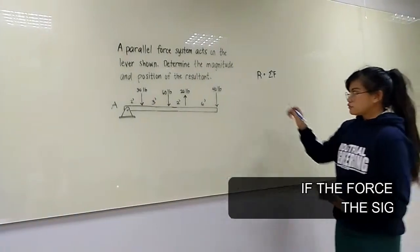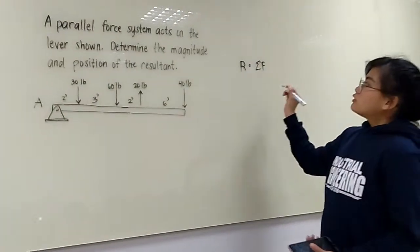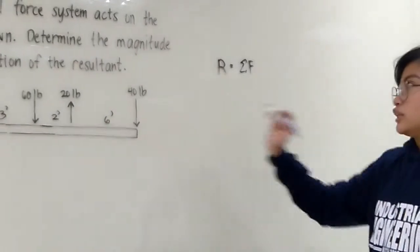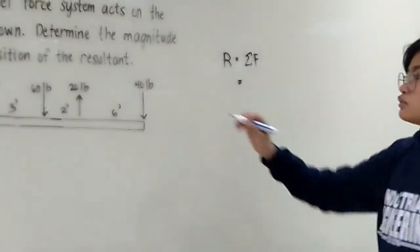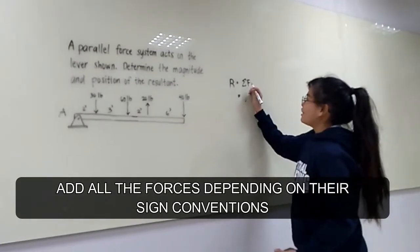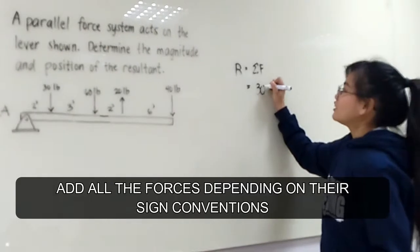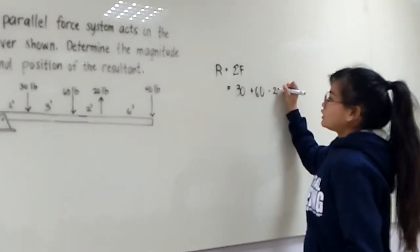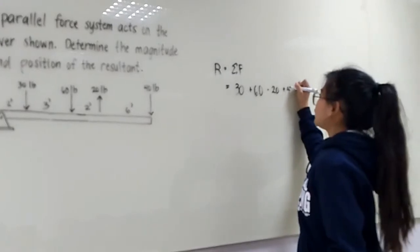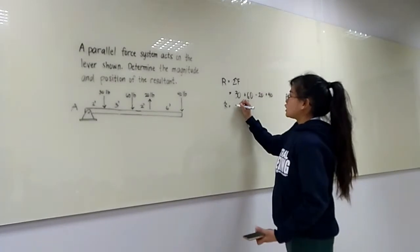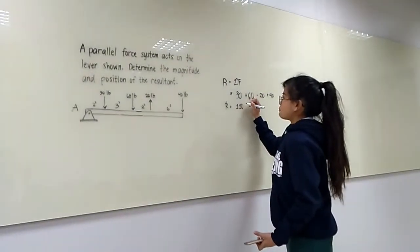Now, let's proceed. So the magnitude of the resultant force is equal to the summation of all the forces. So for the first force, we have positive 30, positive 30, positive 60, negative 20, and positive 40. Adding it up, we have the magnitude of the resultant force, which is equal to 110 pounds.